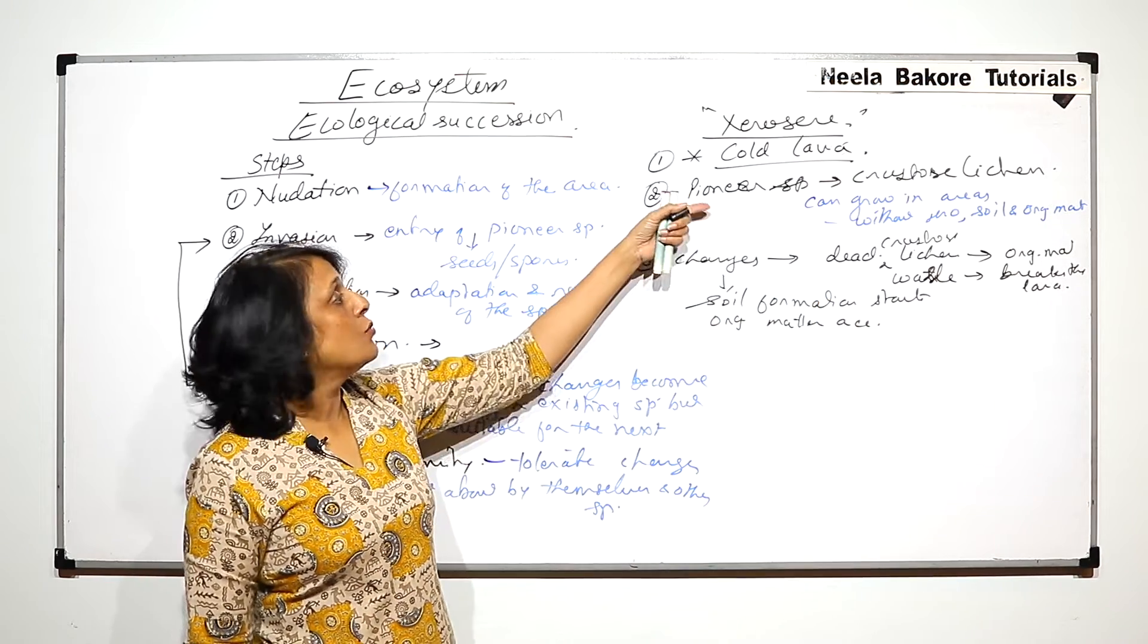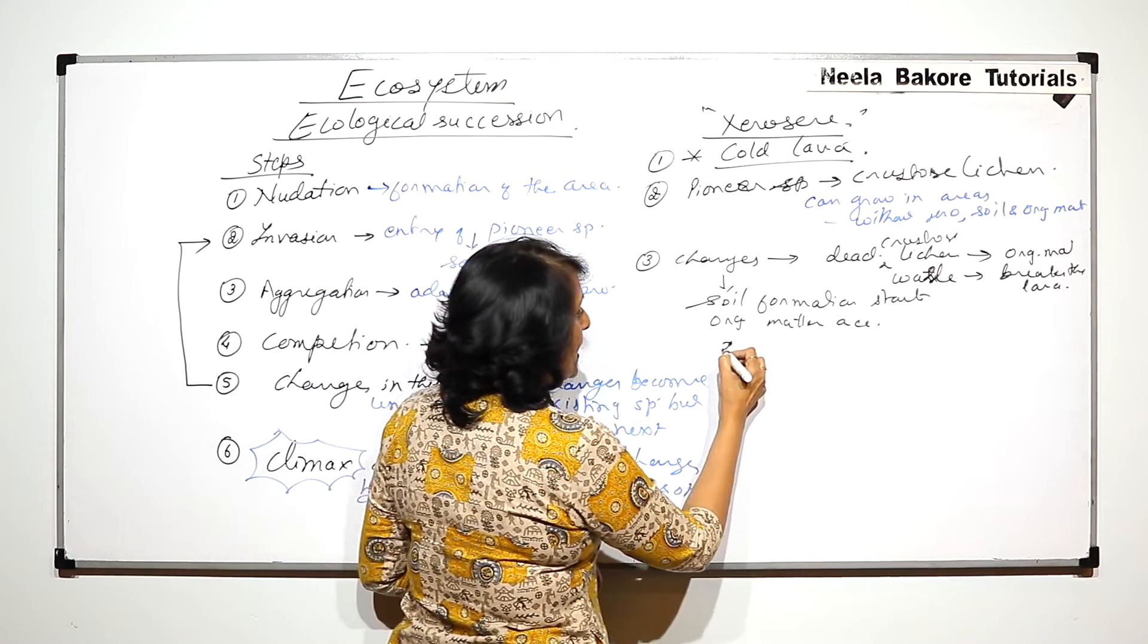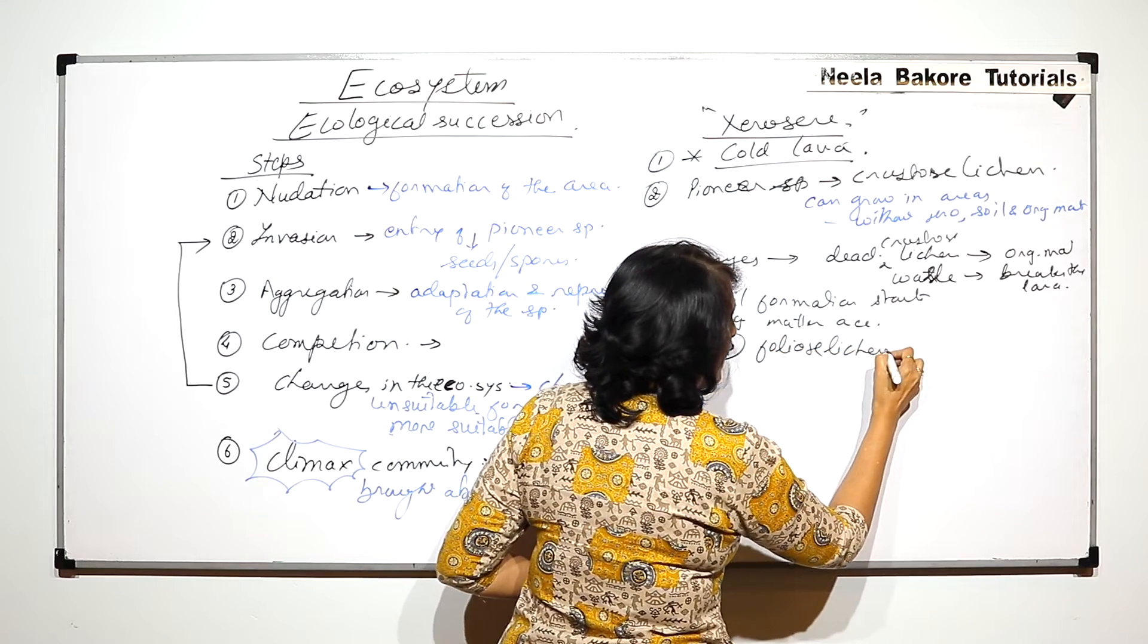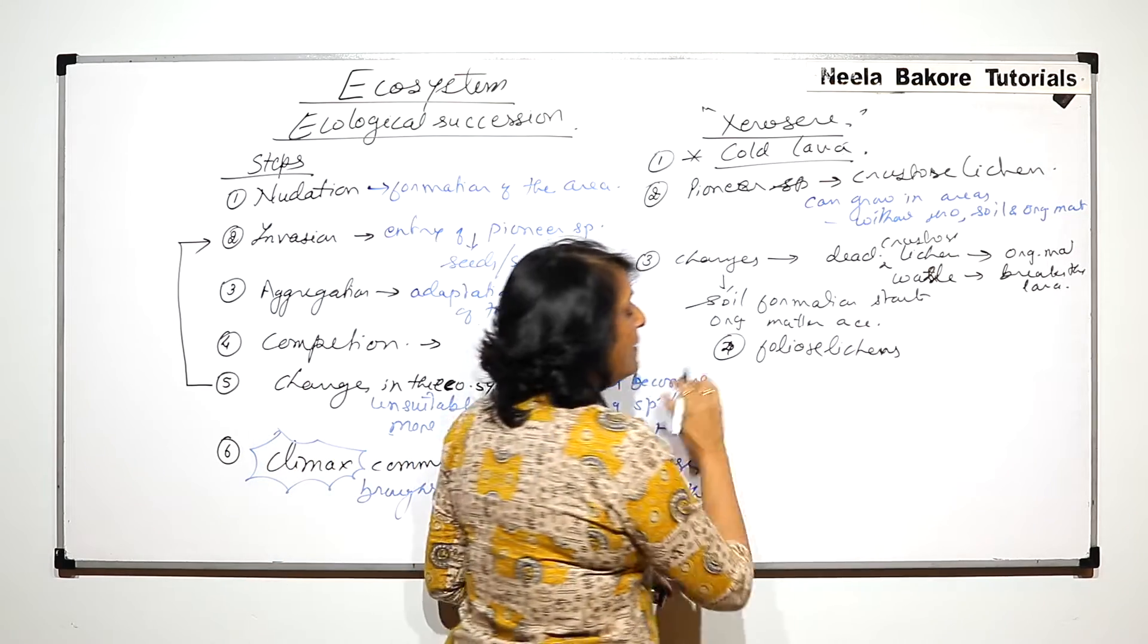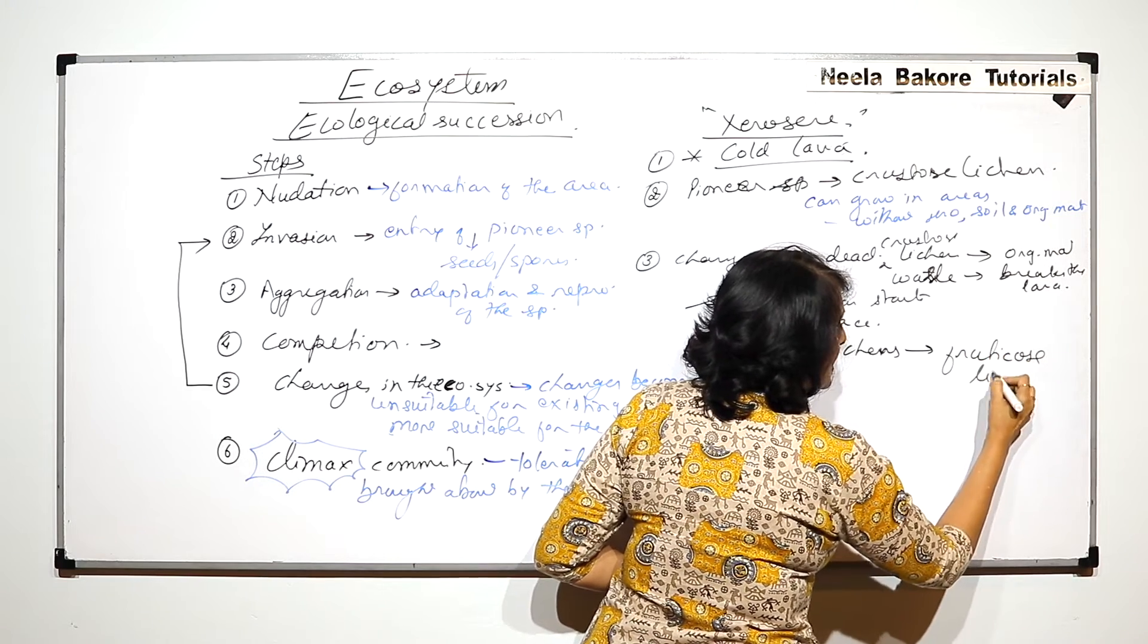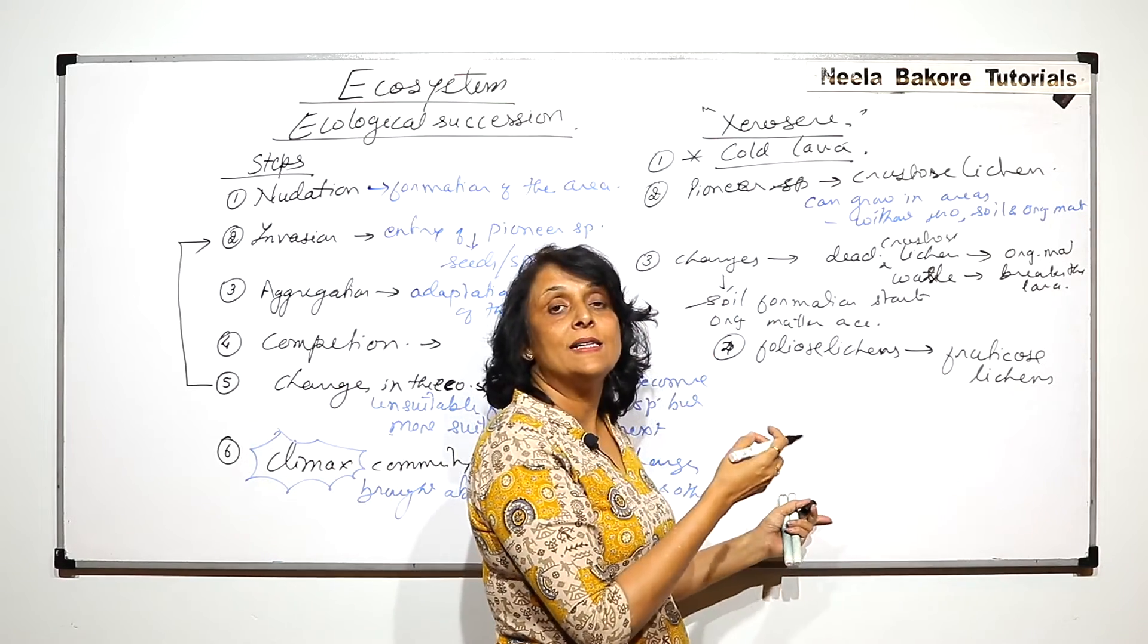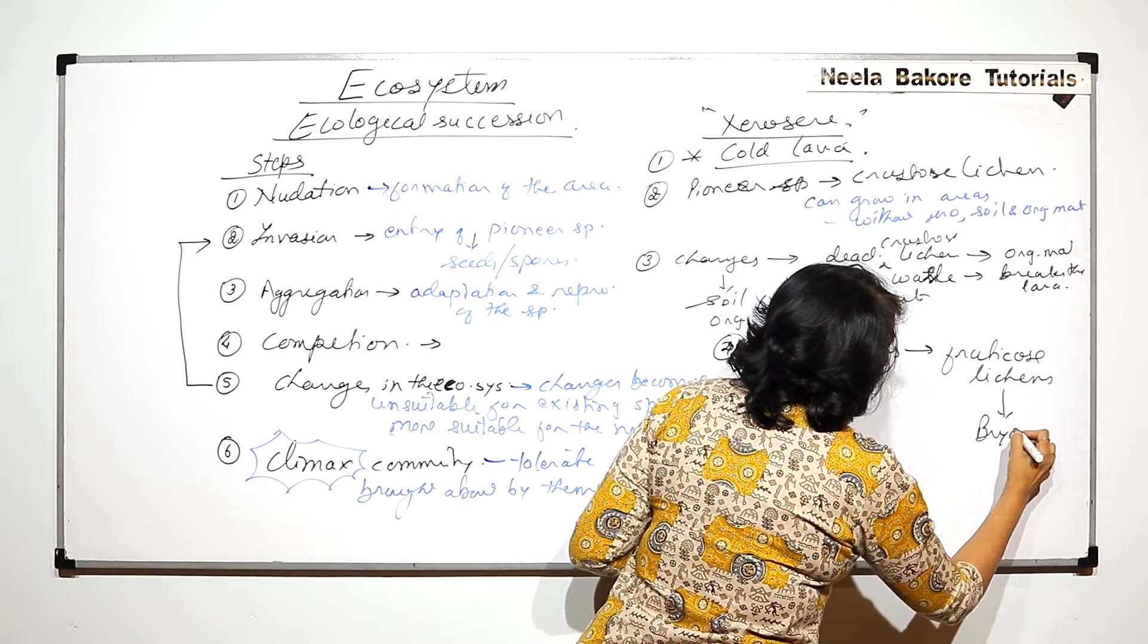This change is unsuitable for the pioneer species. So now they are replaced by foliose lichens. Foliose lichens can live in little bit of soil also. They will be replaced by fruticose lichens. They can live in little more soil. When they die, organic matter gets added, more soil formation replaced by bryophytes.